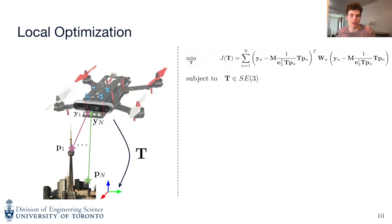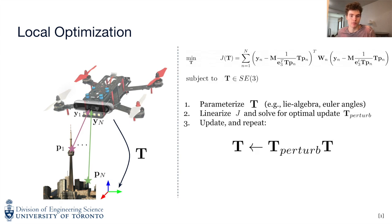Typically this optimization problem is solved with local methods such as gradient descent from an initial guess. We use an unconstrained parameterization of the transformation matrix T, linearize the cost function and solve for the minimizing parameters of a left perturbation of the transformation matrix, update the transformation matrix and repeat until convergence or a maximum number of iterations.